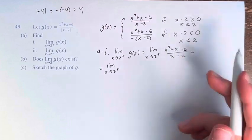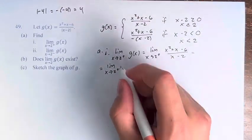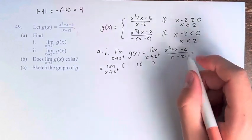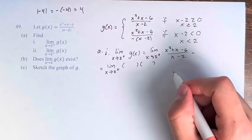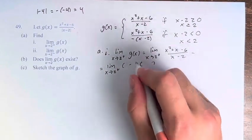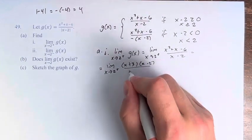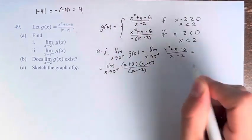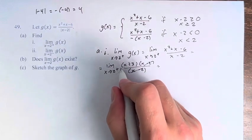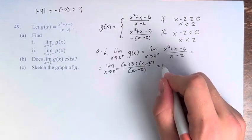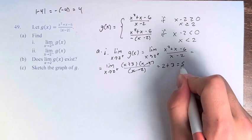We can't just plug in 2 directly because then we'd be dividing by 0. So instead we have to factor the numerator first. I have a trinomial, x squared plus x minus 6, multiplying to negative 6, adding to 1 would be positive 3 and negative 2. So this is over x minus 2, so these just cancel. The limit as x approaches 2 from the right of x plus 3, now we can plug in 2 and it's just 2 plus 3 equals 5.